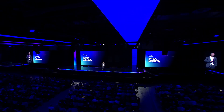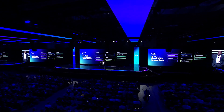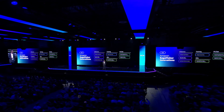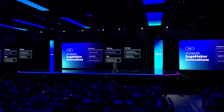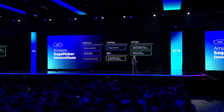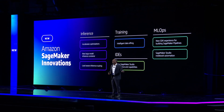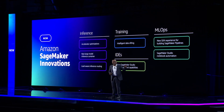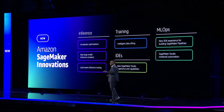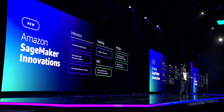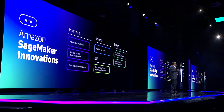Today, we are announcing a slew of new SageMaker features across inference, training, and ML Ops. SageMaker inference reduces model deployment time by 50% on average and achieves better latency by 20%. We also introduced new capabilities in SageMaker Studio, like a new user experience, and all of these updates help customers build, train, and deploy large language models even easier.